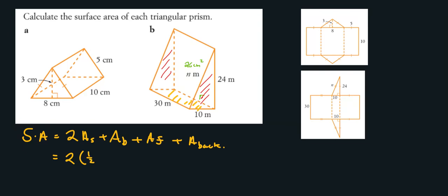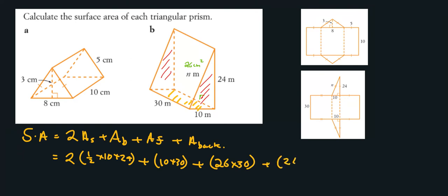We have the area of the front, which is 26 multiplied by 30, and the area of the back which is 24 times 30, and the area of the top which is 10 times 30. Putting that in our calculators we get 2040. Now — what's missing from this solution? The units are missing, and the units are meters squared.